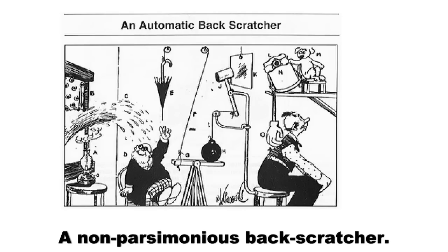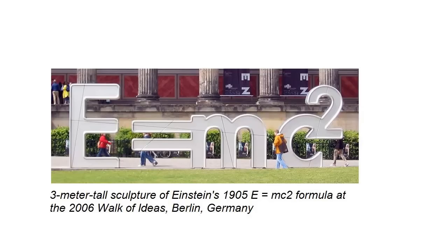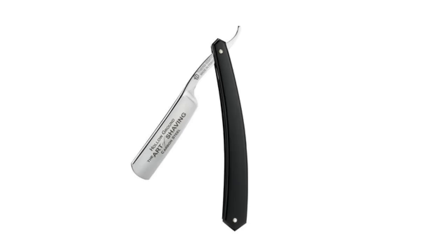Parsimony is a stated preference for simplicity in our explanations. When given the choice of hundreds of possible explanations, the law of parsimony suggests that we investigate the simplest explanations first. The fewer forces, mechanisms, variables in an equation, or steps in a process we need, the clearer the explanation, in general. We refer to it as a razor because, like a very sharp blade, it can be used to remove excess — in this case, remove the unnecessary assumptions from an argument.